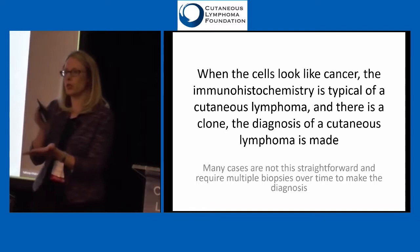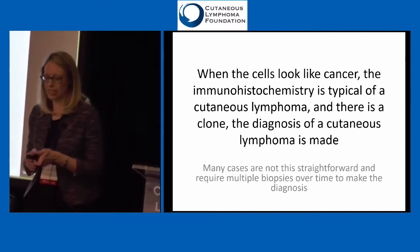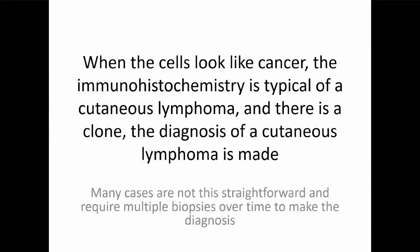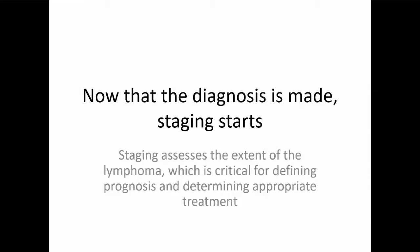Instead of just doing a test that says definitively this is or isn't cancer, the physicians — the pathologist, the dermatologist, maybe the oncologist — have to take all of this information and decide if it makes sense. Do the cells look like cancer? Is the immunohistochemistry typical of a cancer? And is there a clone? If all of those add up, then yes, this is a cutaneous lymphoma. But many times we don't have all three parts, which is why sometimes it takes a while to be certain. We like to be careful and not label people with cancer if they don't have it. This is why it may take years and multiple biopsies to make that diagnosis.